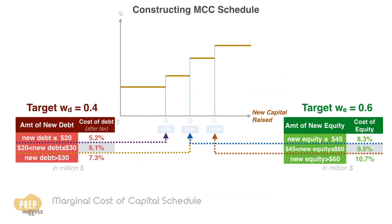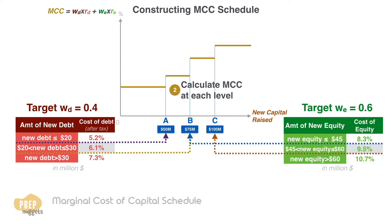So we have a total of three break points — it should be four, but since two of them coincide, we just have three. The next step is to calculate each of these four levels of MCC by applying the target weight to the component cost at each level. For the lowest tier, capital raised below $50 million: cost of debt is 5.2% and cost of equity is 8.3%. Applying the weights, we get an MCC of 7.1%.